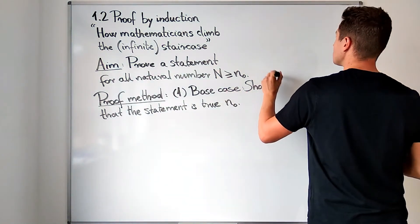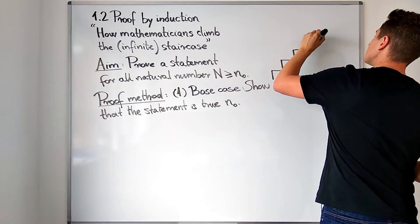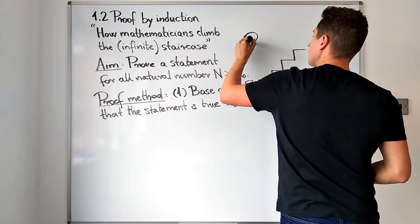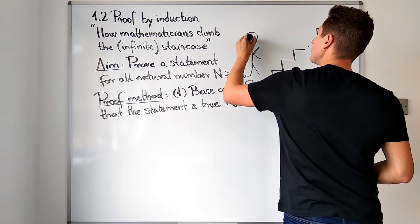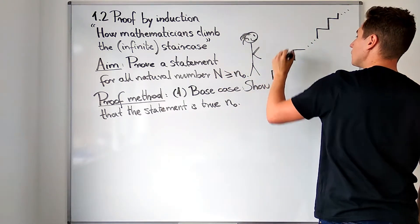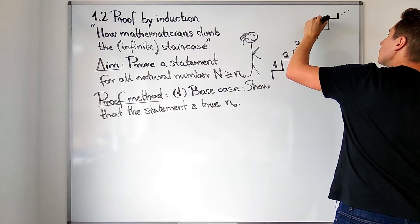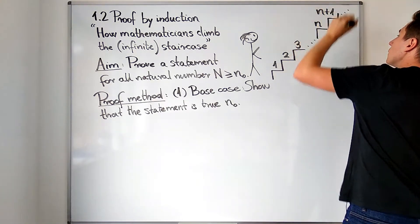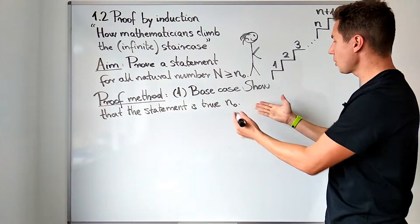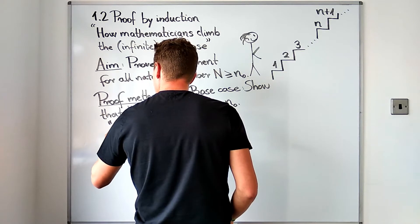We prove the statement is true for the first number n sub zero. If you think of a staircase — imagine an infinite staircase with infinitely many steps — you would be standing at the bottom of the staircase, and your aim is to climb it: step one, step two, step three, and so on to step n, then step n plus one. As a mathematician, you first show that you can make the first step, which is the base case.